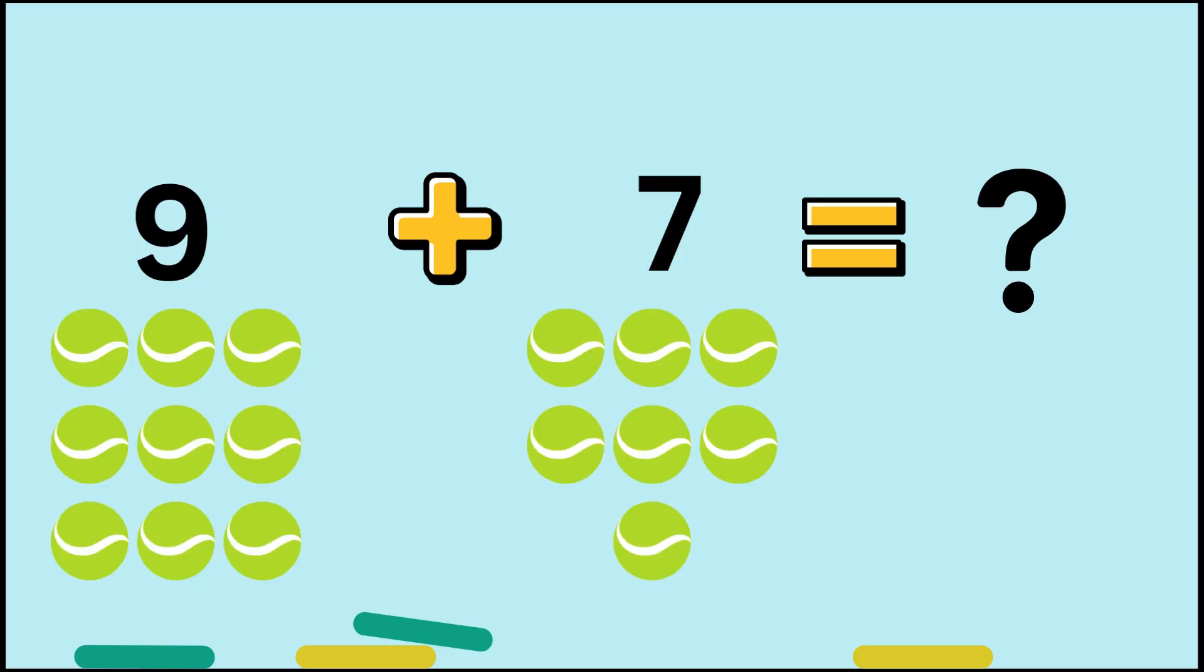Next one. 9 plus 7. Tennis balls. So, this one is going to be on your own again, guys. Good luck. If you guys said 16, woo-hoo! 9 is the bigger number. 10, 11, 12, 13, 14, 15, 16. Done. Boom. We got that.